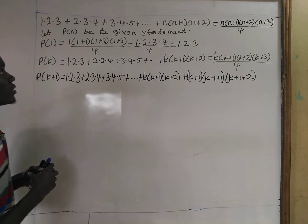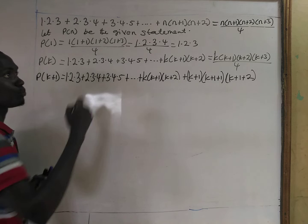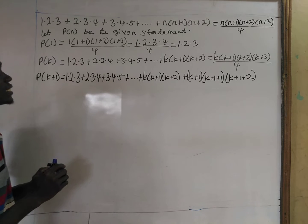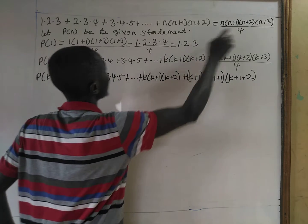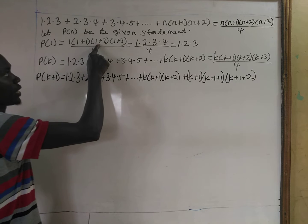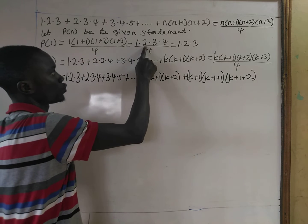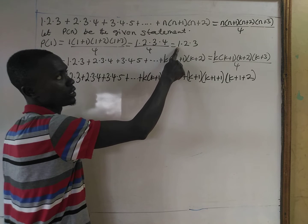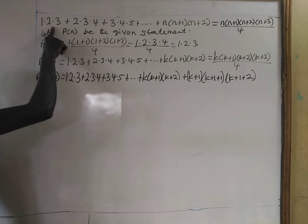Now how do we solve that? We let the given statement be P(n) and prove that P(1) is true — that's the base step or base case. Given n equal to 1, we substitute 1 in to get 1×(1+1)×(1+2)×(1+3) all divided by 4. That gives 1×2×3×4 divided by 4, which equals 1×2×3 = 6. So P(1) is true.